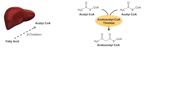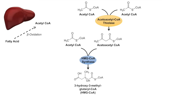Once we have acetoacetyl-CoA, another acetyl-CoA will come along and via the enzyme HMG-CoA synthase will actually produce 3-hydroxy-3-methylglutaryl-CoA, or HMG-CoA. Now, HMG-CoA synthase is the rate-limiting step in ketone body synthesis — that is a very important point to remember. There are actually a couple of different isoforms of HMG-CoA synthase, and for the purpose of ketone body synthesis, the one that's important is the mitochondrial isoform — mitochondrial HMG-CoA synthase or synthetase.